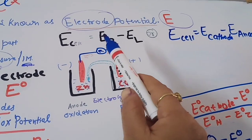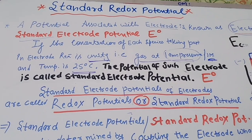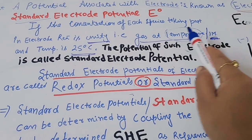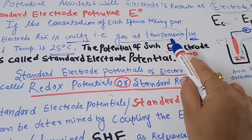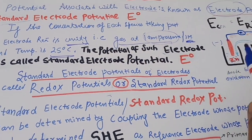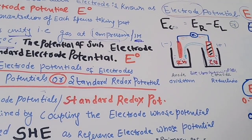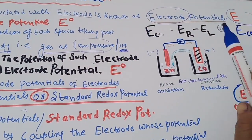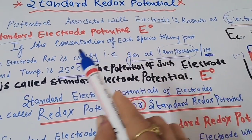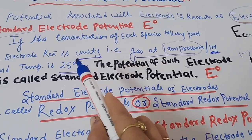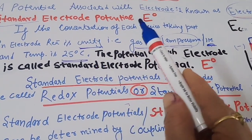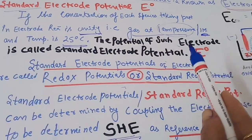We get electrode potential values, but now we are talking about the standard electrode potential. If the concentration of each species taking part in the electrode reaction is unity — that is, gas at one atmospheric pressure and the temperature is 25 degrees centigrade — then the potential of such an electrode is termed the standard electrode potential. So if standard conditions of temperature, pressure, and concentration are taken, the potential of such electrode is termed the standard electrode potential.